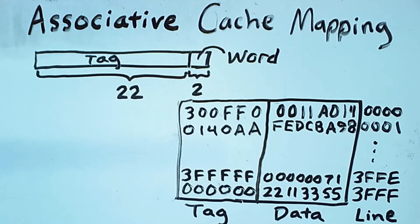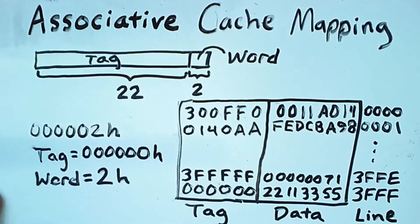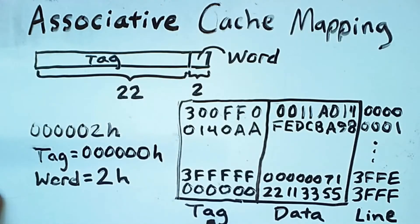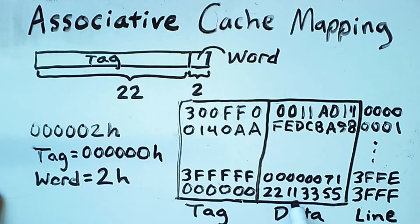However, the benefit is that if I have a memory address like this one, I can separate the first 22 bits from the last two bits to get a tag of 0 and a word of 2. And what I do is I feed the tag of 0, 0, 0, 0, 0, 0, 0, 0 into the tag portion of the cache. And the Content Addressable Memory responds by saying that line 3, F, F, F contains that tag. And therefore, I can use the word portion to figure out which of these memory words I'm actually addressing. Since the word is 2, a 0 would be the 5, 5; a 1 would be the 3, 3; and a 2 would be the 1, 1. So the particular byte that I would retrieve would be 1, 1.